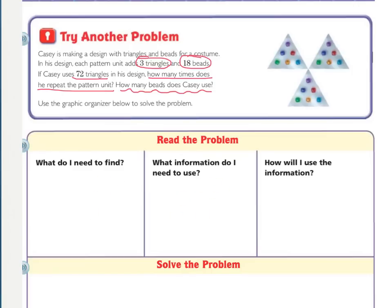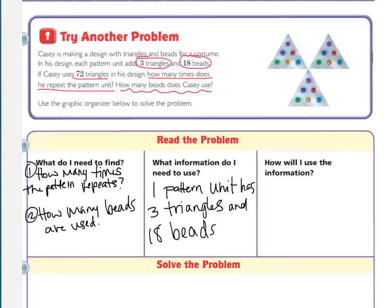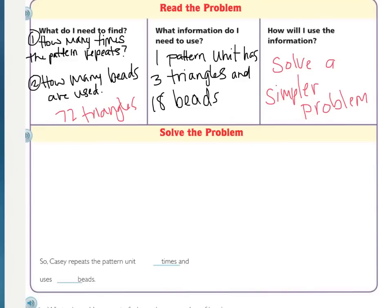Fill out these two boxes. What you need to find is: one, how many times the pattern repeats, and two, how many beads are used — based on 72 triangles. The information you need: one unit has three triangles and 18 beads. Our strategy for today is to solve a simpler problem, so we're going to look at the patterns with smaller numbers to find the relationship between them.